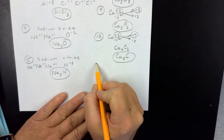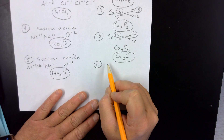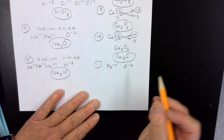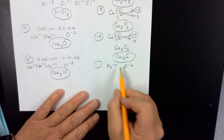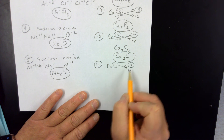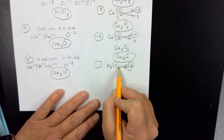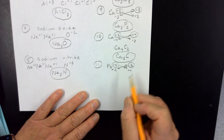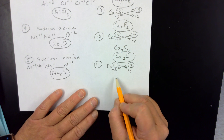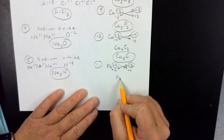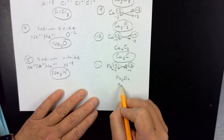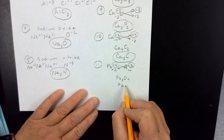Problem eleven: Pb plus four and O minus two. Drop and swap — oxygen gets a subscript of four, lead gets a subscript of two. Drop all charges. If we leave it as Pb₂O₄, we see that two to four can be reduced. So this becomes PbO₂.